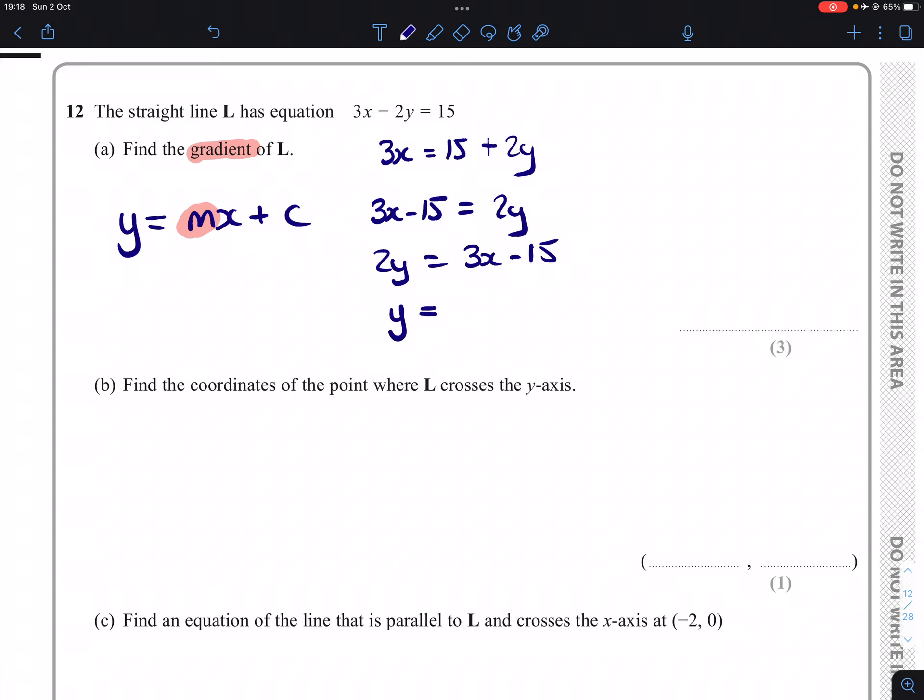I don't want to write this as a single fraction because we have this takeaway sign here, but more importantly because we need our mx and our c terms to be separate. So we end up with 3/2x and we end up with -15/2, which means that our gradient is 3/2.